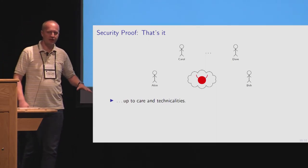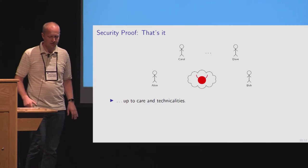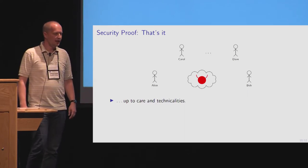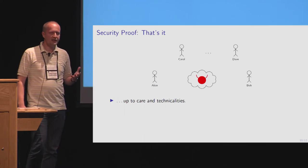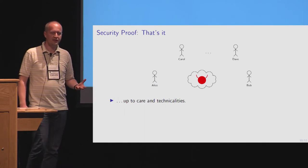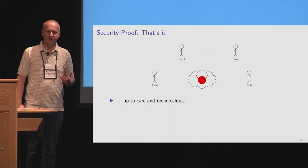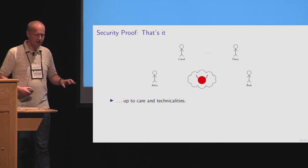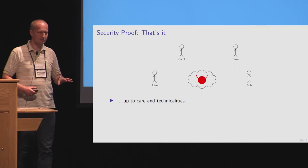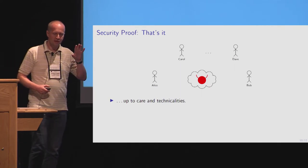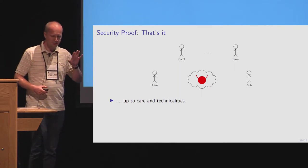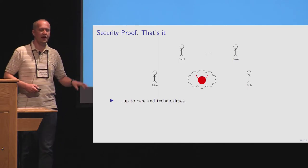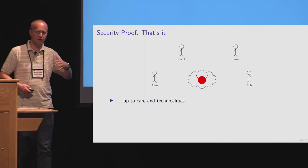There are some technicalities — you have to take care that nonces are not repeated — but you end up with a nice result: the loss in tightness is linear. In practice, the adversary's key exchange advantage is bounded by the number of users times the strong oracle advantage of two different adversaries, plus the decision Diffie-Hellman advantage of one adversary.